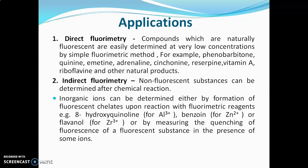The first application is direct fluorimetry. Compounds that are naturally fluorescent are easily determined at very low concentrations using simple fluorimetric methods. Examples include phenobarbitone, quinine, emetine, adrenaline, cinchonine, reserpine, vitamin A, riboflavin, and other natural compounds — all of which can be directly analyzed.